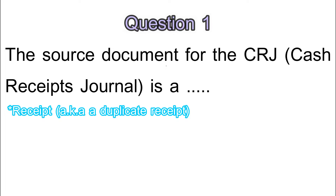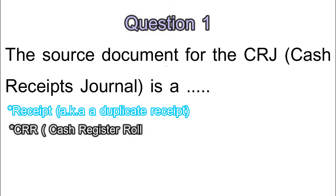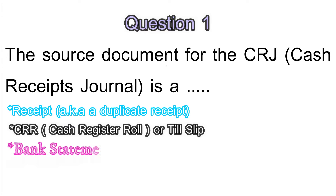The second source document is a CRR — a cash register roll. It is a slip given to you when you purchase at a till; it's basically a till slip. The third one is the bank statement, which is issued by the bank to the holder of the account at the end of the month. It reflects all transactions that took place in that account within a specified time.